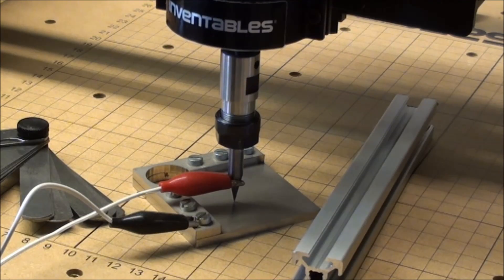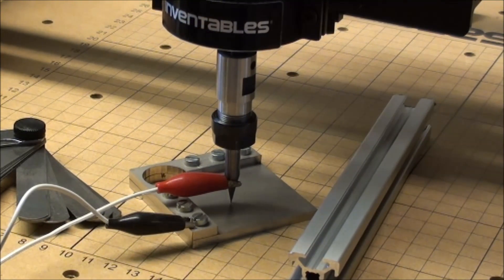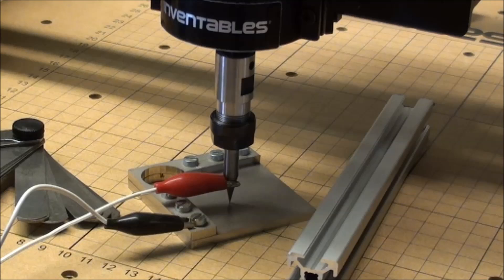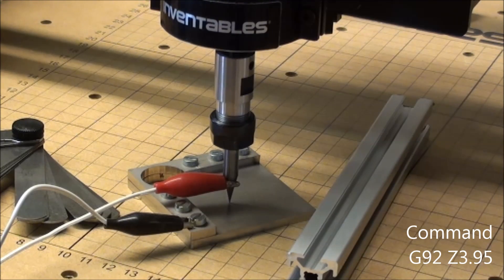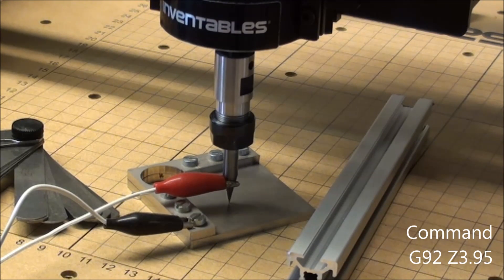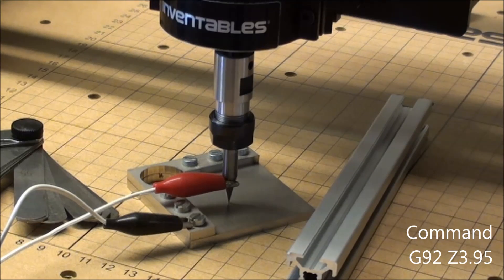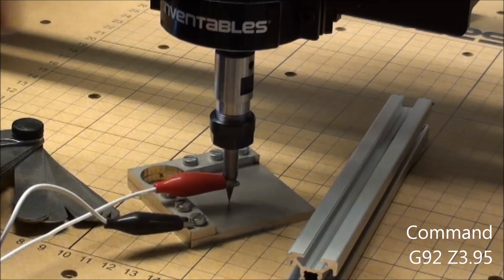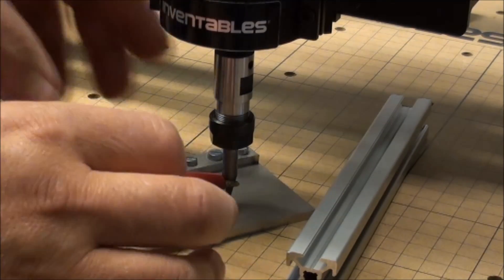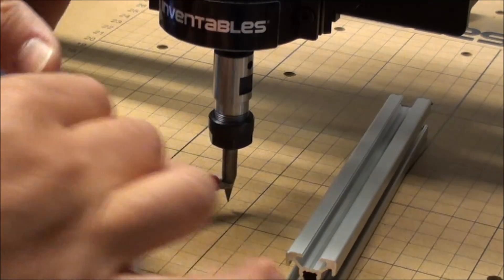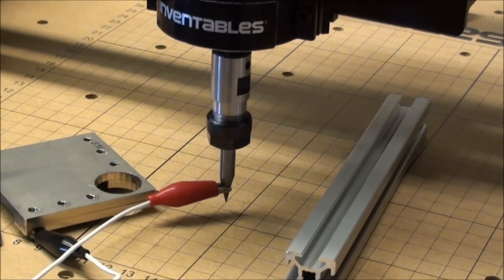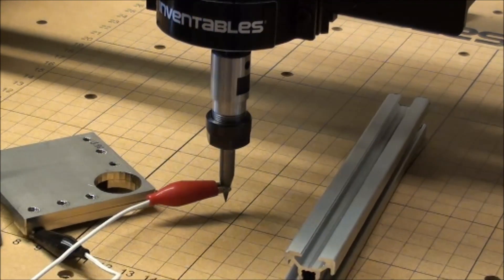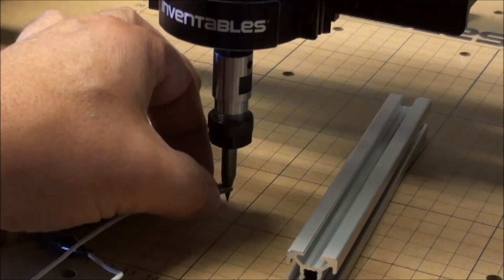I will go and tell the computer that by issuing a G92 order. G92 space Z and then this plate is 3.95, so that makes the set now on the computer go to 3.95.